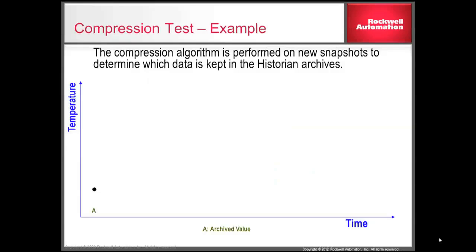Taking a look at an example of a compression test, we have one value currently in our archive. As we get new values in, based on the compression deviation, we take a look at the slope between the archive value and the new values that have come in. As long as the slope remains constant, we wait until we get a new value that actually falls outside of that compression deviation.